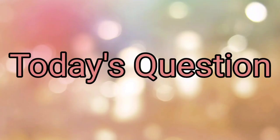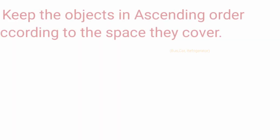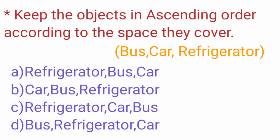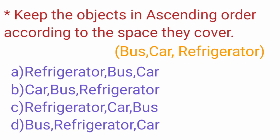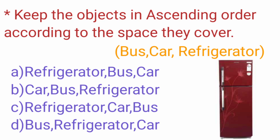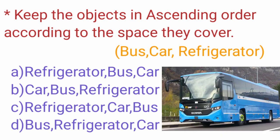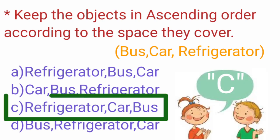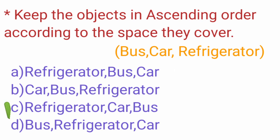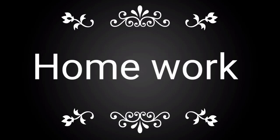Today's question: keep the objects in ascending order according to the space they cover. The objects are bus, car, and refrigerator. The object which covers least space will come first and the object which covers most space will come last. The correct answer is option C — refrigerator, car, bus.